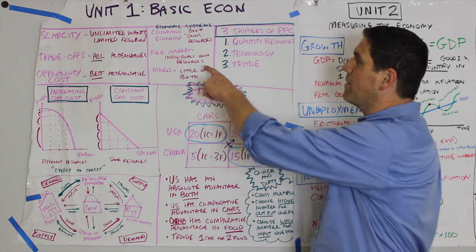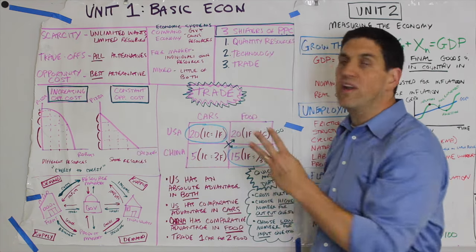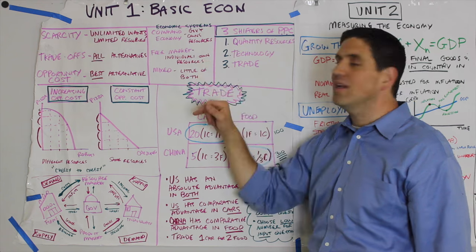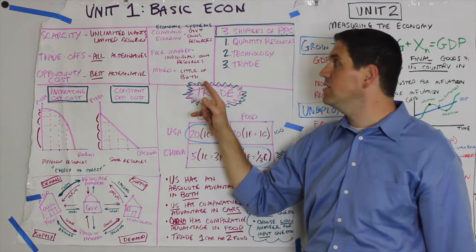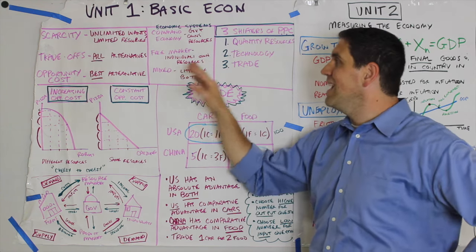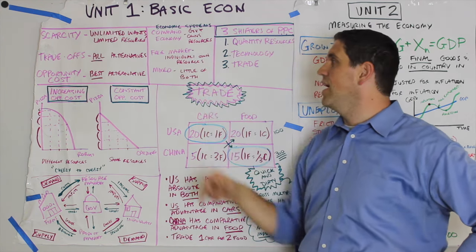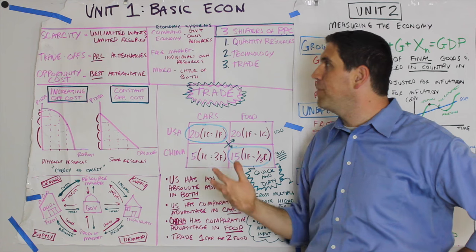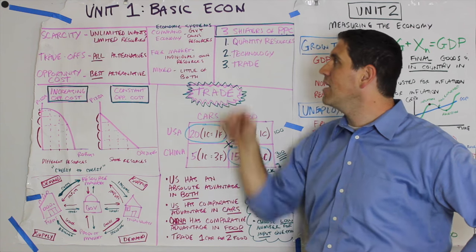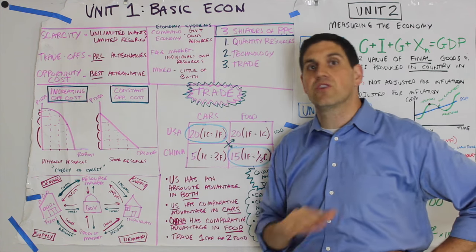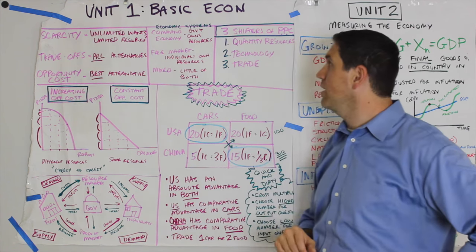Now we're going to talk about economic systems. There's three different types: command economies, free market, and mixed economies. In the free market, individuals own the resources and there is private property. In a command economy, the government owns the resources and there's no private property.